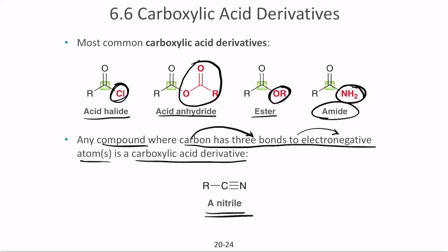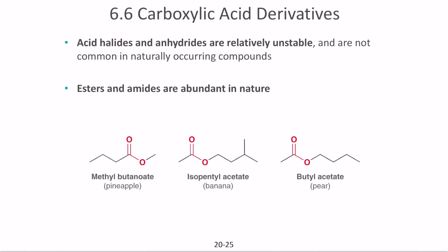Even a nitrile can be considered a carboxylic acid derivative, because even though there is no oxygen, the carbon still has three bonds with an electronegative atom. For acid halides the carbon has two bonds with oxygen and one with chlorine; for amides it's one bond with amino and two with oxygen — still three bonds with electronegative atoms. Acid halides and anhydrides are generally relatively unstable and not common in nature, whereas esters and amides are the most abundant and give certain fruits their flavor.